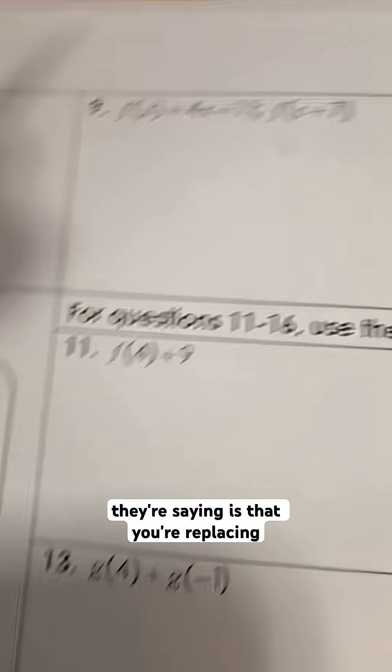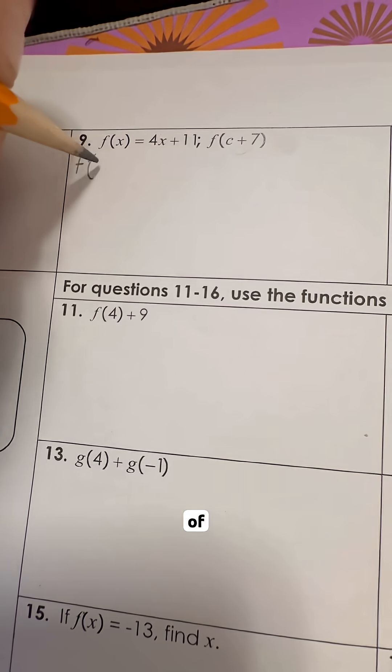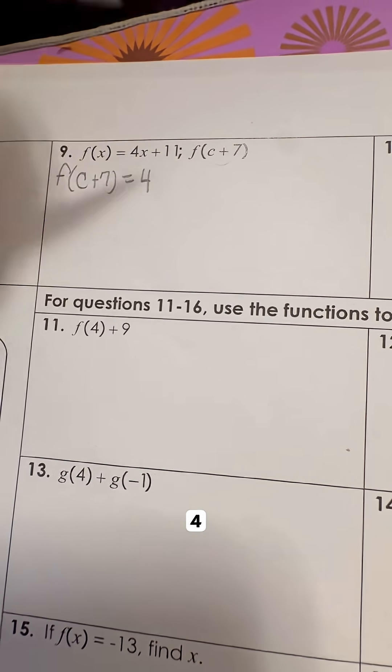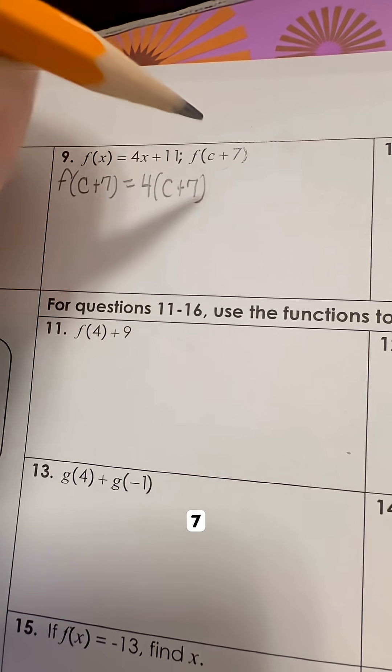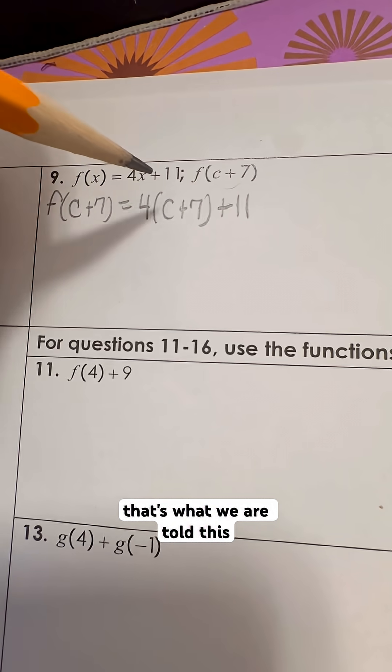So what they're saying is that you're replacing your x with c plus 7. So we're going to say f of c plus 7 is equal to 4 and then we're replacing x again with c plus 7 and then plus 11. So that's what we are told. This is 11 right here.